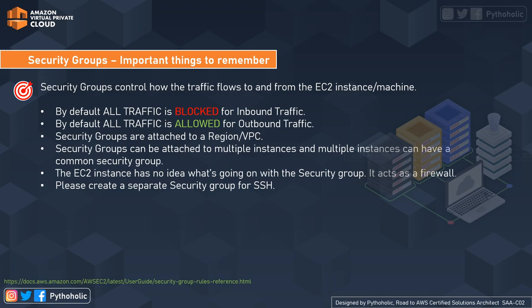When you create an EC2 instance, if you haven't provided any specific configuration, the default security group allows all traffic that you send from your instance to the outside world. But incoming traffic is always blocked. However, you can still access other resources.